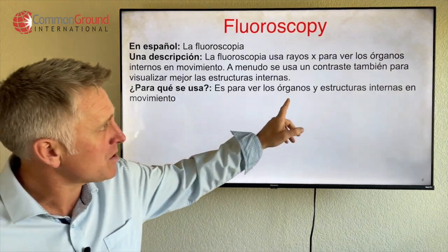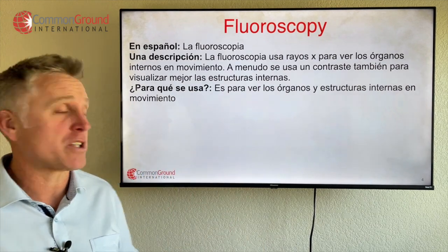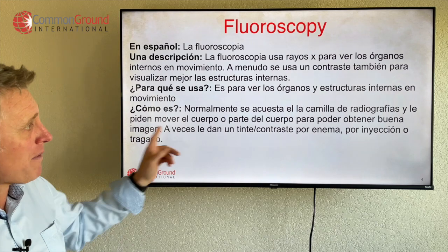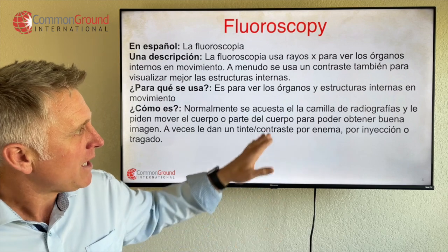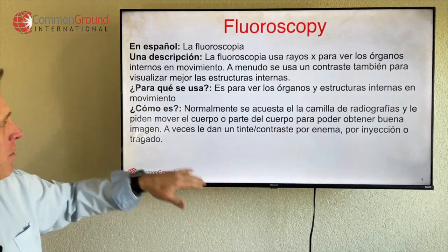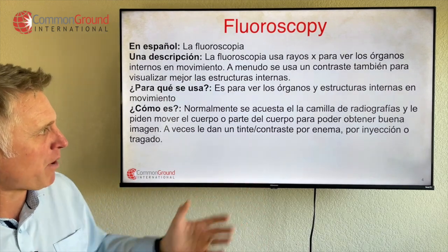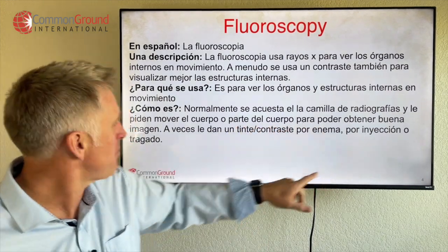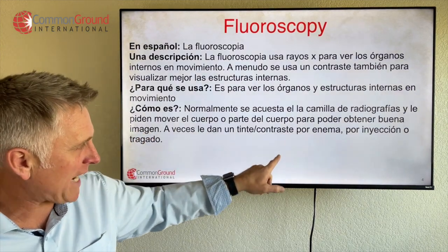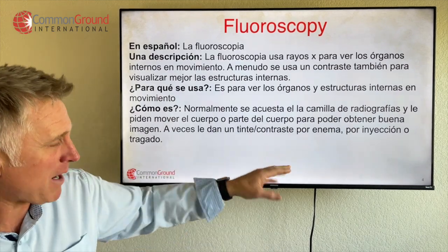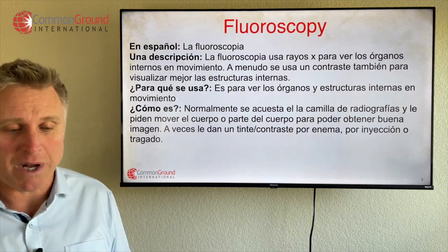¿Para qué se usa? Es para ver los órganos y estructuras internas en movimiento — the organs and internal structures in movement. Normalmente se acuestan en la camilla de radiografía, so you normally lie down on the x-ray table, y le piden mover el cuerpo, o parte del cuerpo, and they'll ask you to move your body or part of your body, para poder obtener buena imagen, in order to get a good image. A veces le dan un tinte o contraste — sometimes you'll get a contrast — por enema, by enema, por inyección, by injection, o tragado, or you'll swallow it.